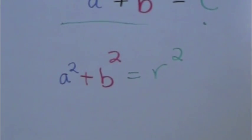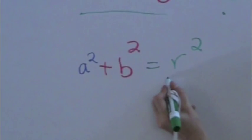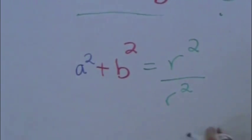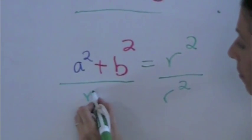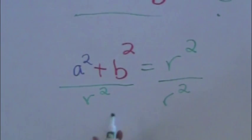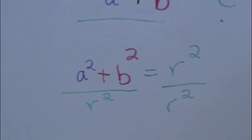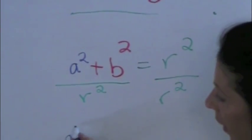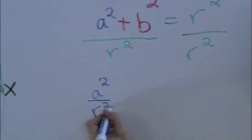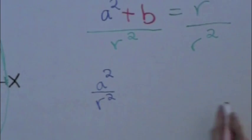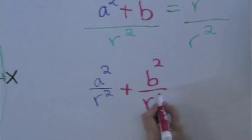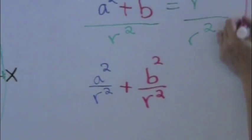From there, we're going to divide the entire equation by the radius. So we're going to take r squared and we're going to divide everything. And recall from distributive properties, you can actually end up having a squared over r squared plus b squared over r squared. And what is this equal to? That's equal to 1.